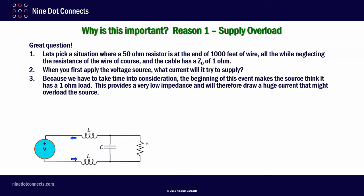So why is all this important? Great question. We're going to talk about five specific reasons, and we're going to use the same scenario on all of them. So let's pick the situation where the 50 ohm resistor is at the end of a thousand feet of wire. All the while we're going to neglect the resistance of the wire, of course, because it's not going to change the overall concept of what we're trying to explain. Now, that cable we're going to say has a Z0 of only one ohm. When you first apply the voltage source, what current will it try to supply? Well, if we take time into consideration, the beginning of this event makes the source think it has a one ohm load attached to it. This provides a very low impedance, and therefore it will draw a huge current that will probably overload your source.